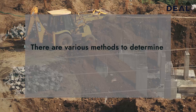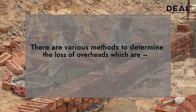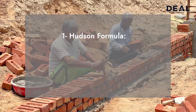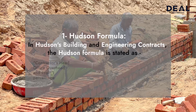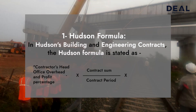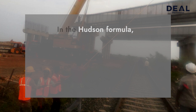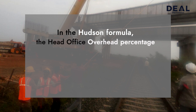There are various methods to determine the loss of overheads. 1. Hudson Formula: In Hudson's Building and Engineering Contracts, the Hudson Formula is stated as — contractor's head office overheads and profit percentage multiplied by contract sum divided by contract period, multiplied by period of delay. In the Hudson Formula, the head office overhead percentage is taken from the contract.